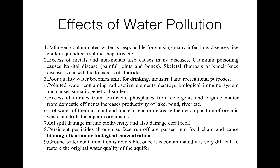Eutrophication may cause reduction in the number of fishes and it increases BOD, that is biological oxygen demand. Hot water from thermal plants and nuclear reactors decreases the decomposition of organic waste and may kill aquatic organisms because of the sudden change in temperature of water. It affects hatching of eggs, causing early hatching, and may cause failure of trout eggs to hatch and failure of salmon to spawn.